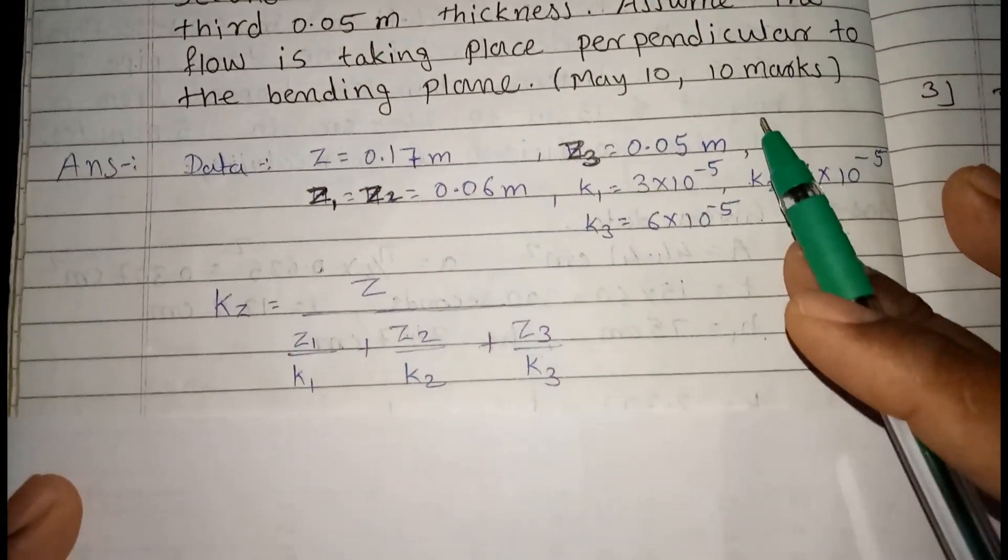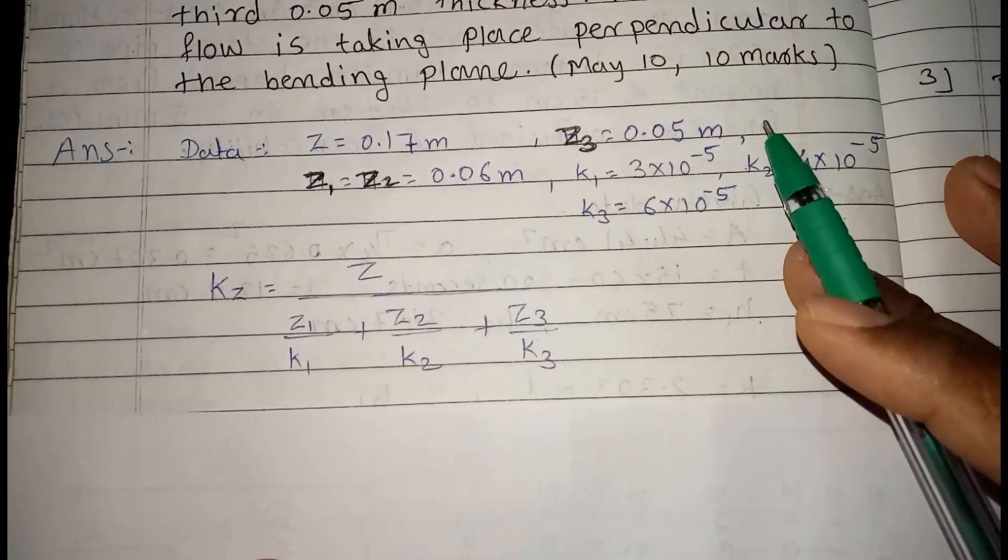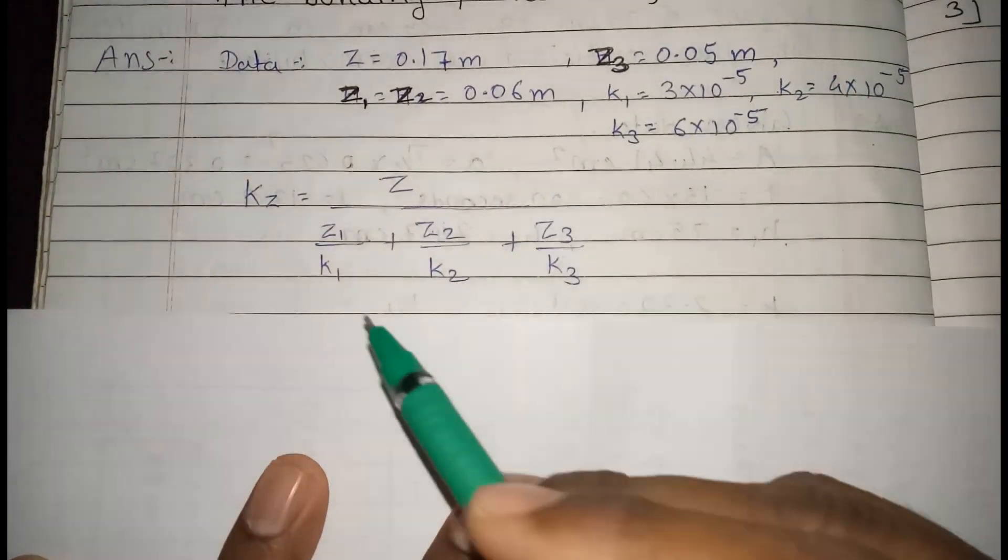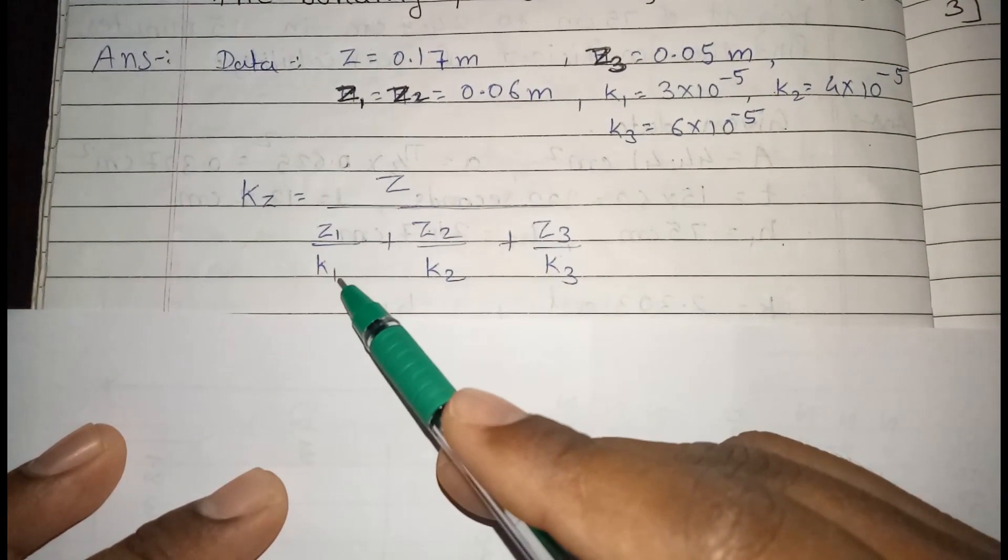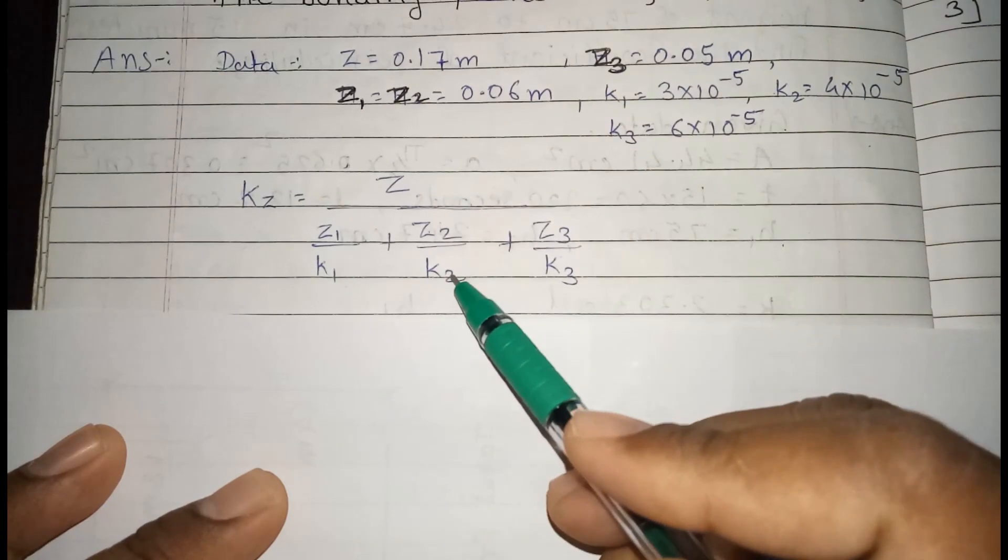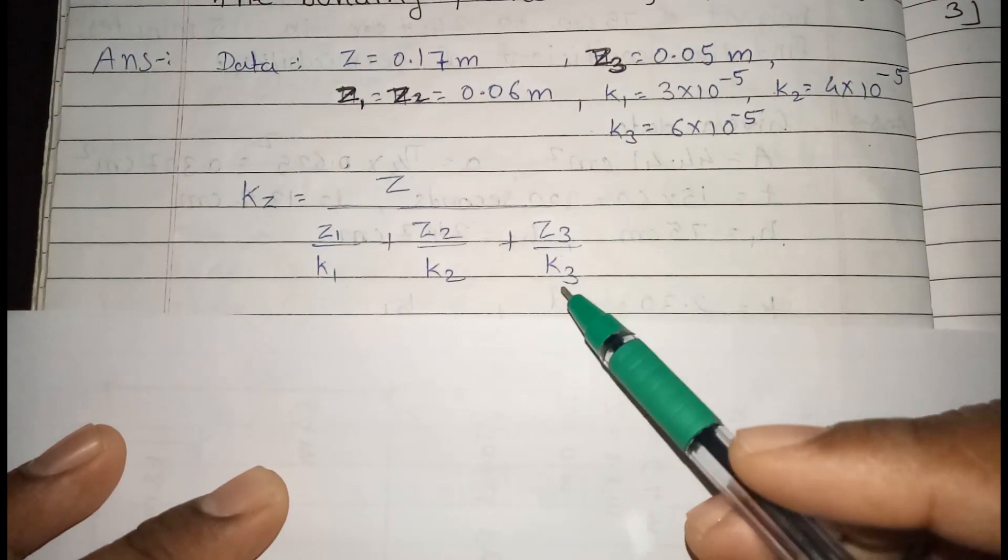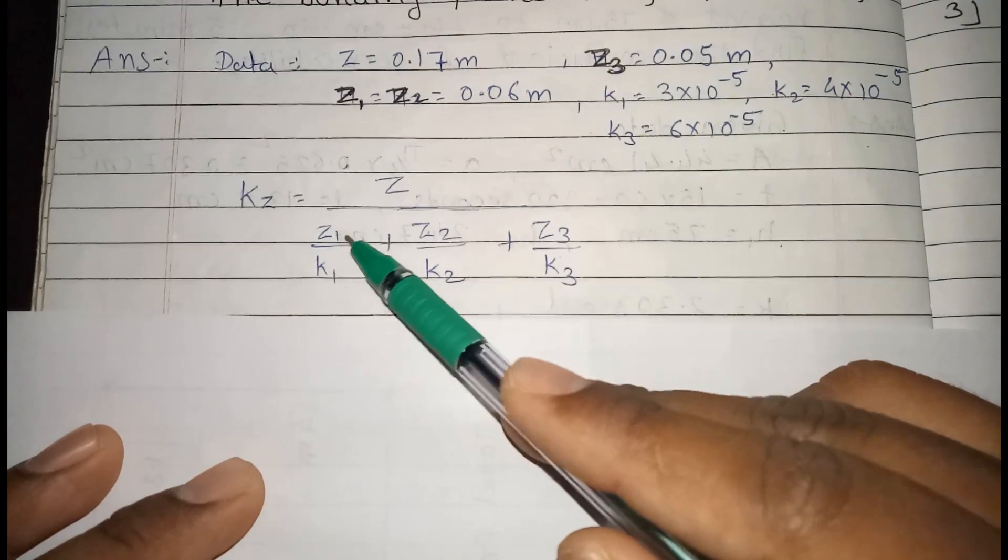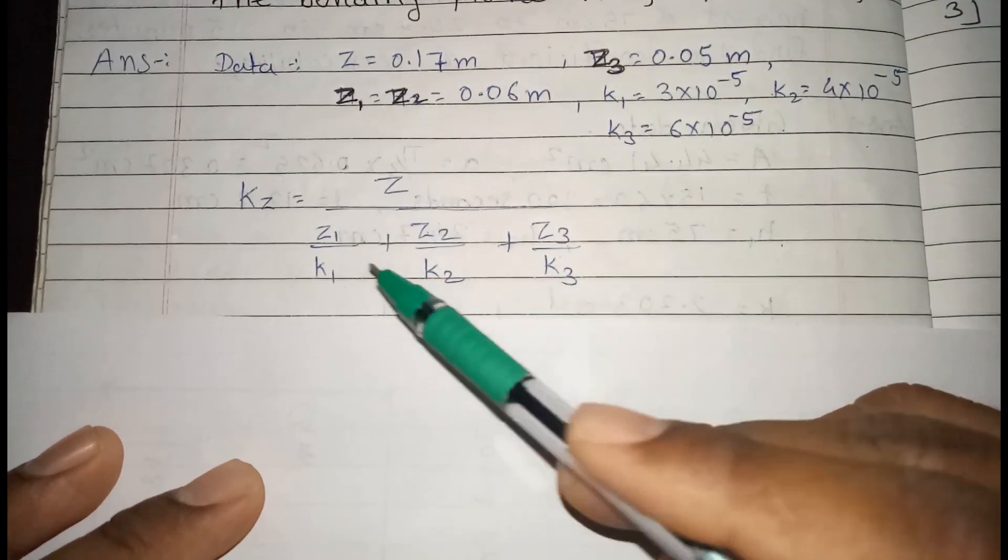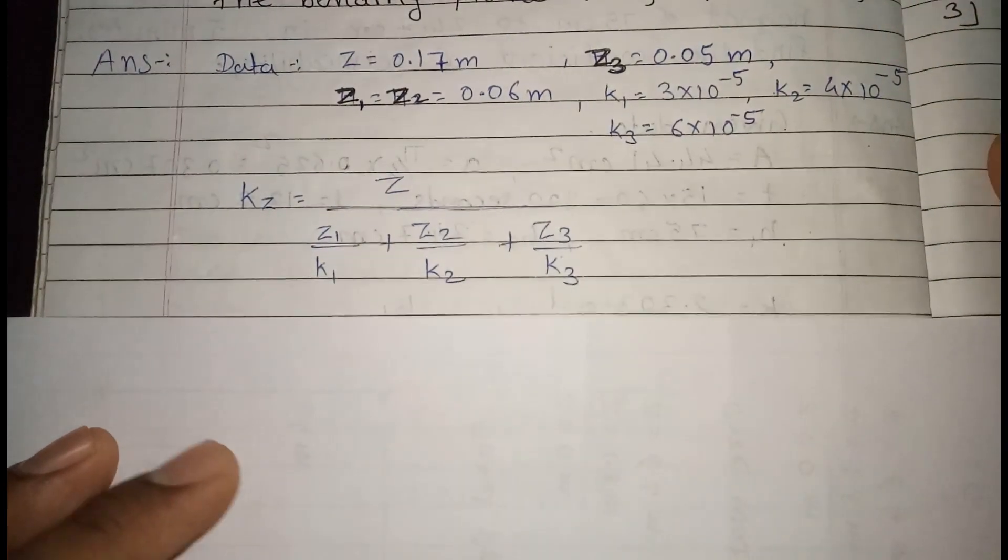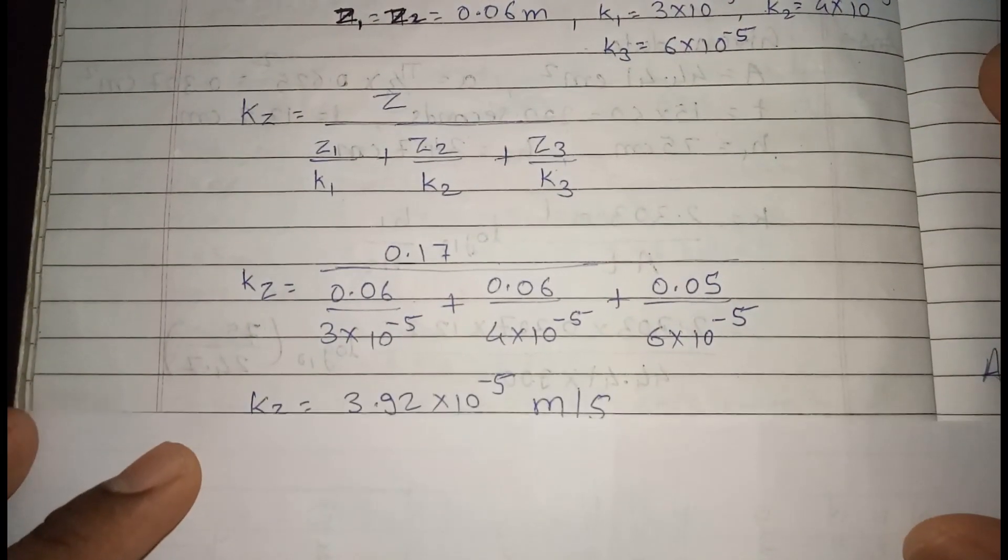We know that the formula for flow taking place perpendicular to the bedding plane is KZ is equal to Z, total Z upon Z1 upon K1 plus Z2 upon K2 plus Z3 upon K3. We have all values of Z1, Z2, Z3, K1, K2, K3, total Z. So we can calculate the KZ or coefficient of permeability in Z direction.